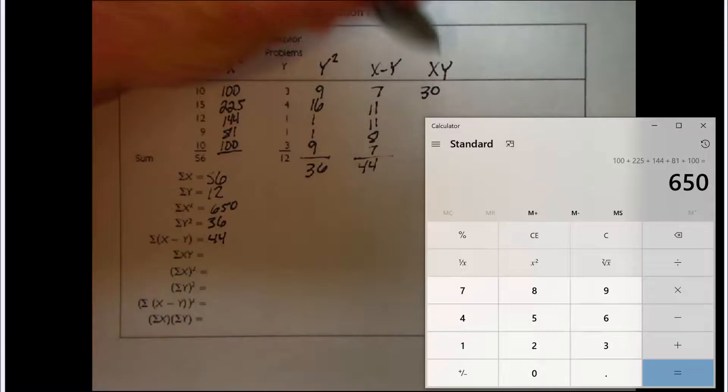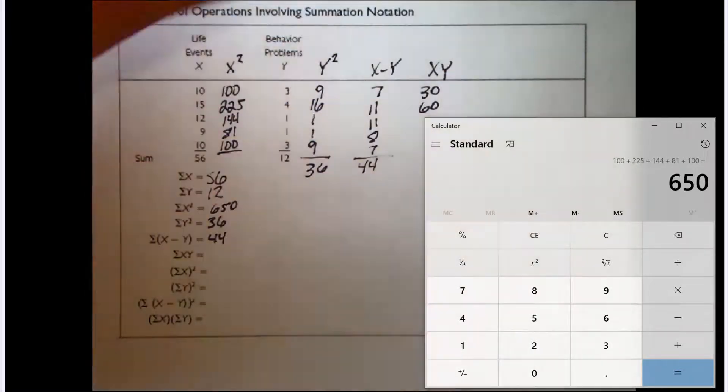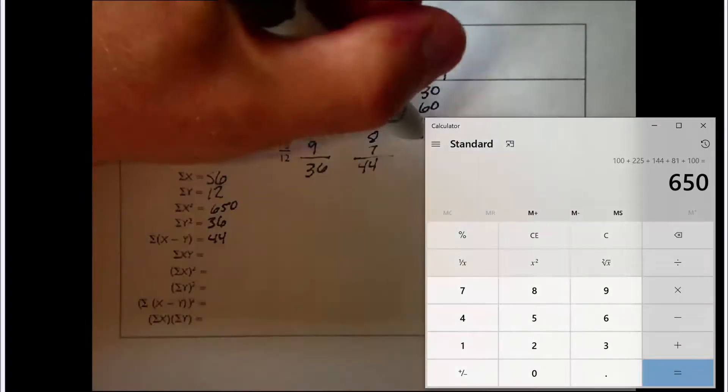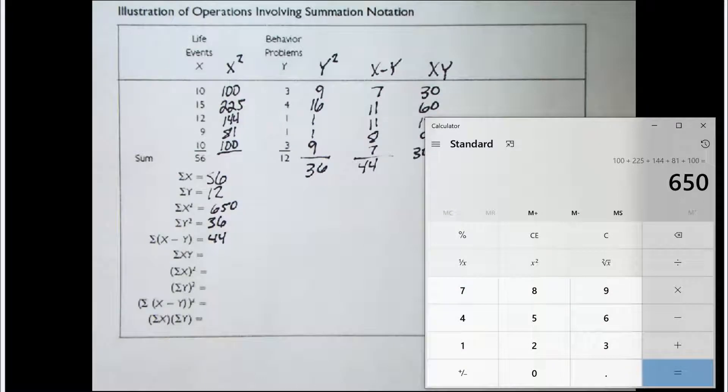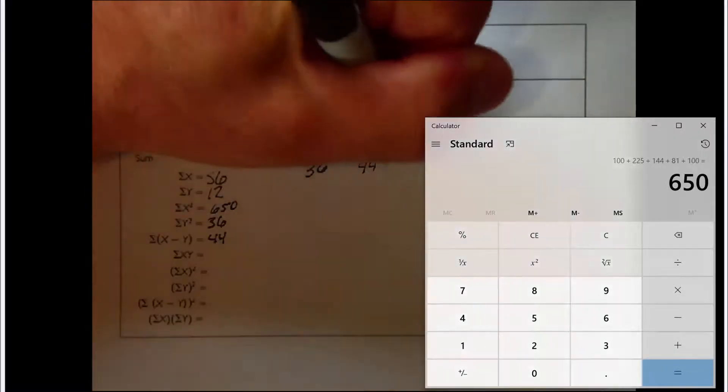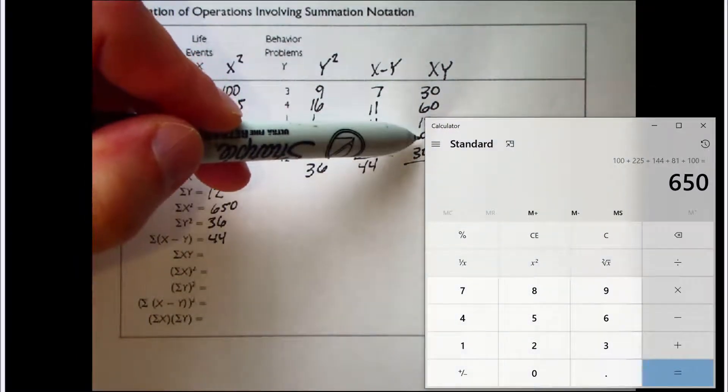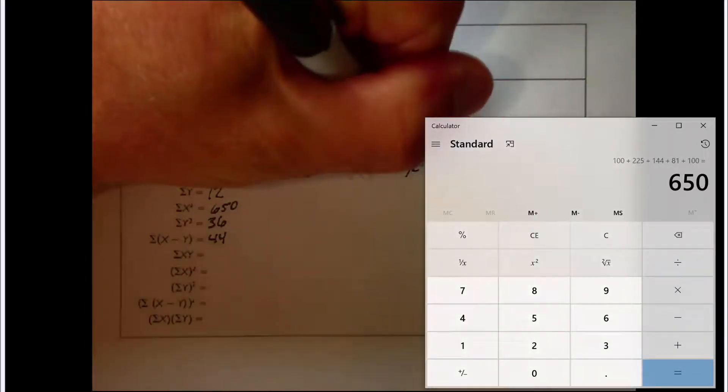So we've got 10 times 3, which would be 30. 15 times 4, which is 60. 12 times 1 is 12, 9 times 1 is 9, 10 times 3 is 30. So that was step two. Now we want to see if we're ready for step three. We ask ourselves, do we have a column labeled with what we've been asked to sum up? And we do. So we're ready for step three. We should sum up that column. 30 and 60 is 90. That's 102, 111, 141.